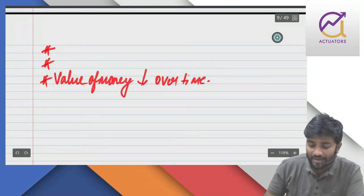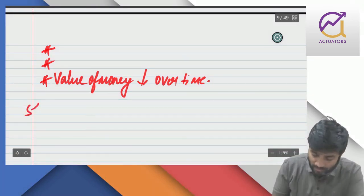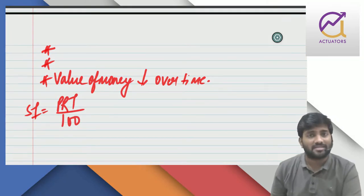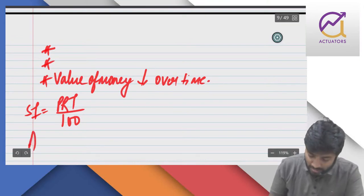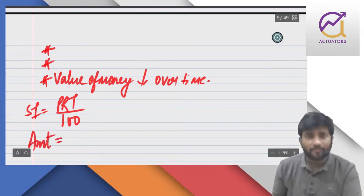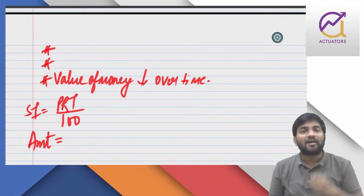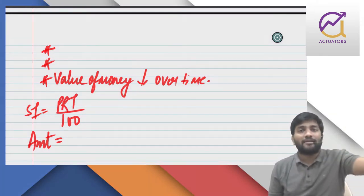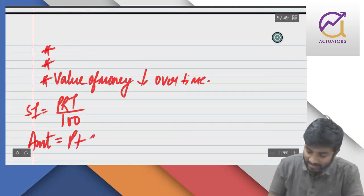Then we moved on to simple interest. The formula for simple interest was PRT by 100, where R is expressed in percentage and R by 100 makes it a decimal. The formula for amount is principle plus interest — that is, the principal along with accumulated interest gives us the future value, which is the amount.